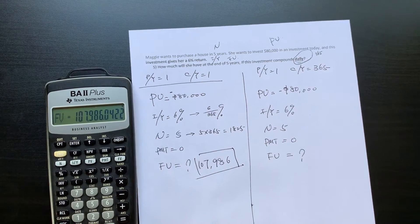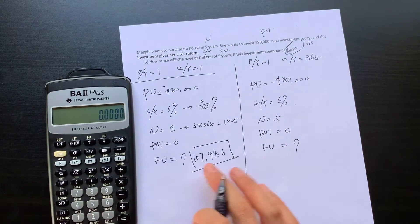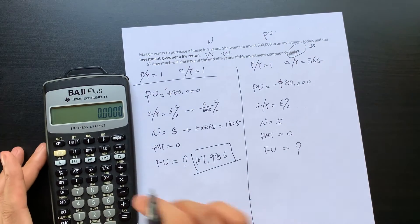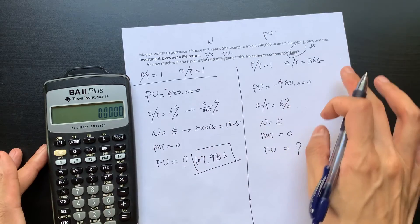This is the first way to solve it. So if you don't want to adjust your number here, you just want to tell your calculator that I'm going to compound at a daily.